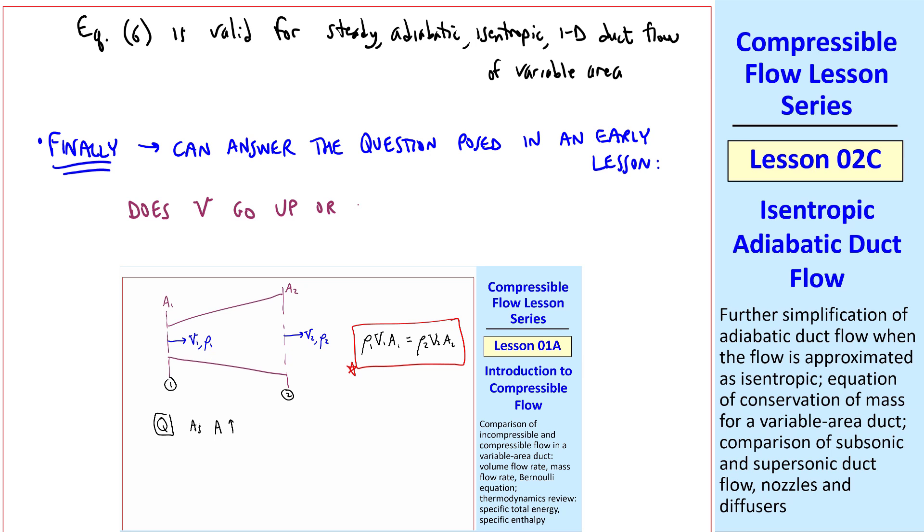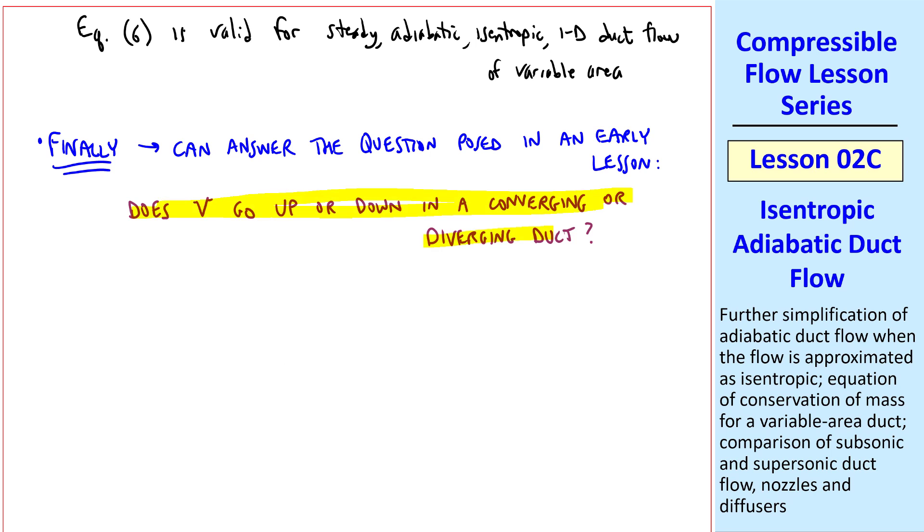Namely, does speed V go up or down in a converging or a diverging duct? We'll use our equation 6 to answer this question, and it turns out that it depends on whether the flow is subsonic or supersonic.